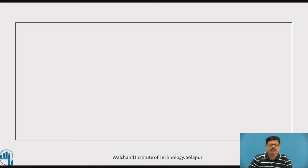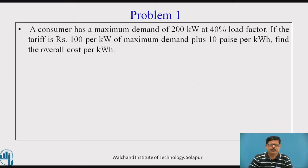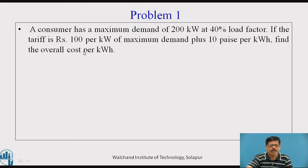Now let us see the first problem. In Problem 1, it is given that a consumer has a maximum demand of 200 kW at 40% load factor. So maximum demand is given as 200 kW and load factor is 0.4. If the tariff is Rs. 100 per kW of maximum demand plus 10 paise per kWh, find the overall cost per kWh.